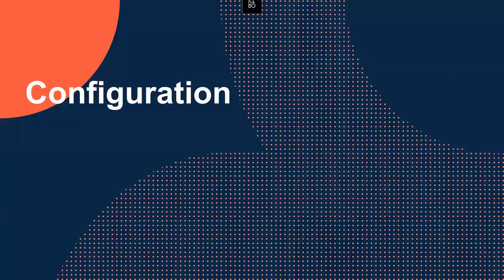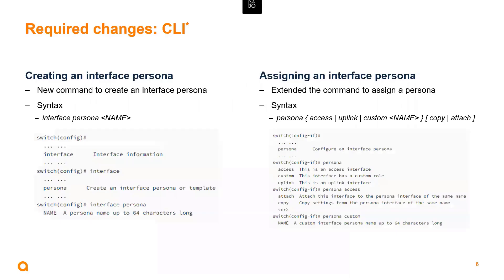Let's take a look at the configurations. At the CLI level, we simply run the interface persona command and give it a name. That name could be up to 64 characters long. Once we provide a name, we're now in the interface persona context where we can start applying a persona to this interface persona.